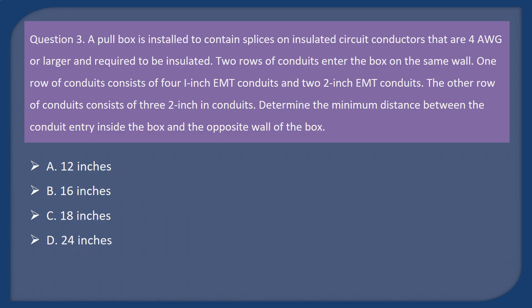Question 3. A pull box is installed to contain splices on insulated circuit conductors that are 4 AWG or larger and required to be insulated. Two rows of conduits enter the box on the same wall. One row of conduits consists of four 1-inch EMT conduits and two 2-inch EMT conduits. The other row of conduits consists of three 2-inch conduits. Determine the minimum distance between the conduit entry inside the box and the opposite wall of the box. A. 12 inches. B. 16 inches. C. 18 inches. D. 24 inches.